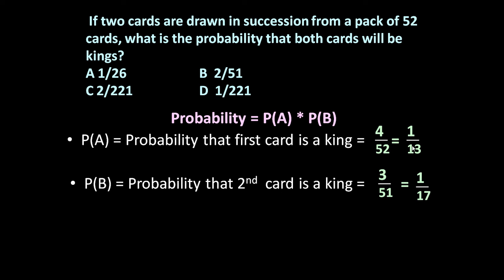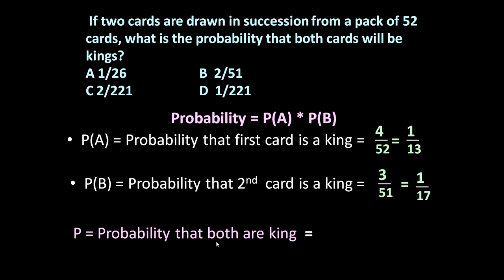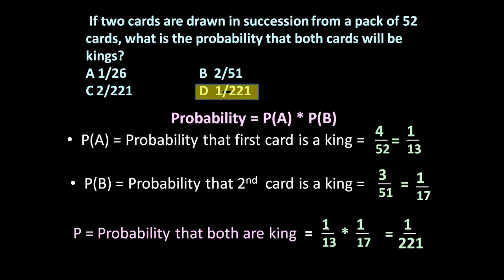We have determined PA = 1/13 and PB = 1/17 individually. The overall probability that both cards are kings is PA × PB = 1/13 × 1/17 = 1/221. So the answer is 1/221.